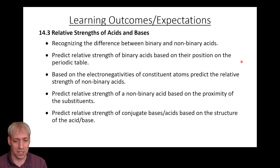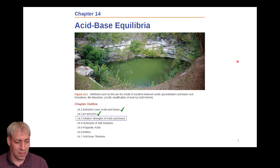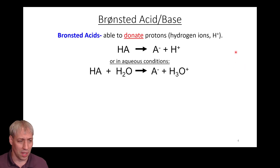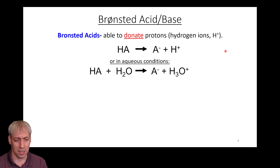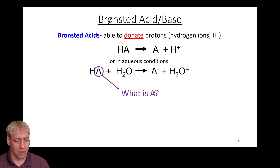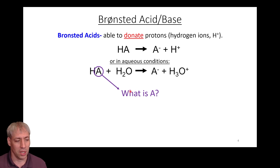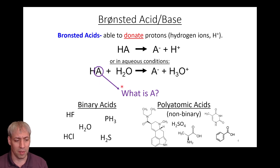Here are our learning outcomes and expectations for part two of 14.3. We talked about acids and their ability to donate protons, and bases and their ability to accept protons. What we haven't talked about yet is what that acid actually is — we've had lists of Ka values and talked about strong versus weak, but now we're going to talk about the identity of A and how that dictates how willing it is to give up that H+.